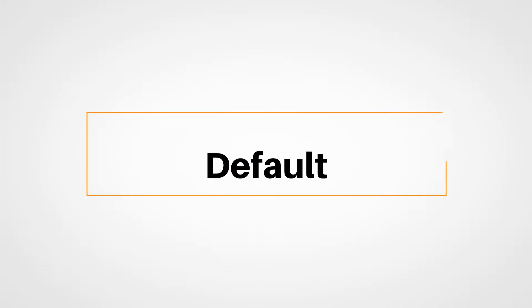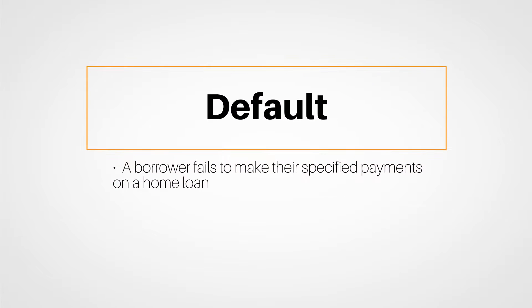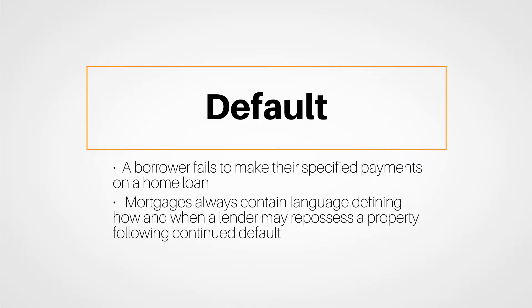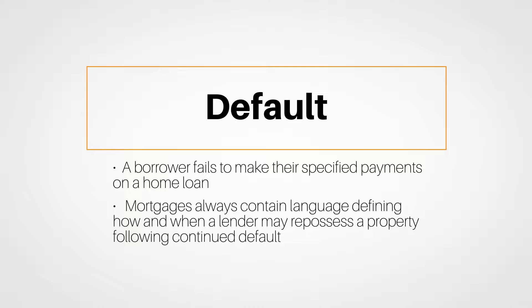A mortgage default occurs when a borrower fails to make their specified payments on a home loan, and mortgages always contain language defining how and when a lender may repossess a property following continued default.